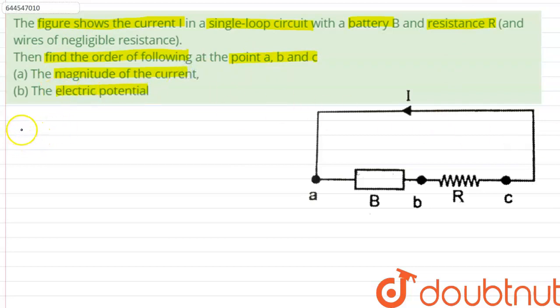First we will find out the answer of part A. Part A is asking us to find out the magnitude of the current throughout the circuit.